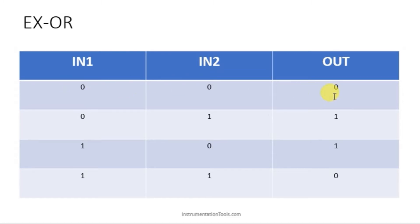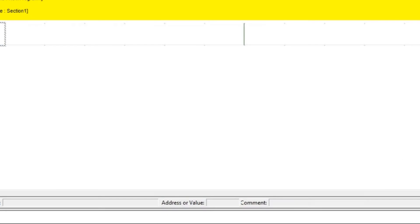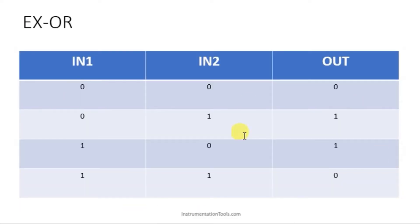If both inputs are off, output is off. With previous gates, by seeing the first condition we could conclude whether to use a normally open or normally closed contact, and whether it is in series or parallel. But here it is difficult to understand how to place the contacts. If any one input is on, output is on — this is something like an OR gate. But if both are on, output is still off.